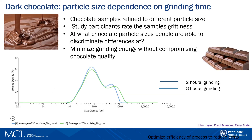Another chocolate study here at Penn State was focused on how chocolate perception depends on grinding times. Chocolate samples were refined to different particle sizes. The goal was to minimize grinding energy without compromising chocolate quality. This plot shows that prolonged 8-hour grinding decreased the amount of larger particles, which affected chocolate grittiness.